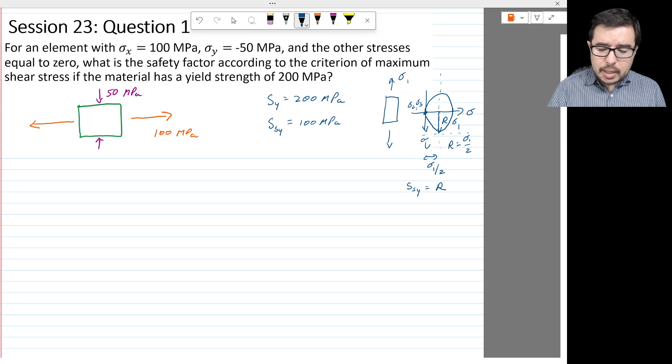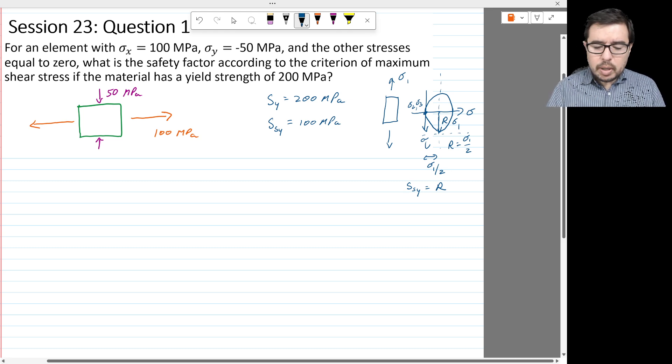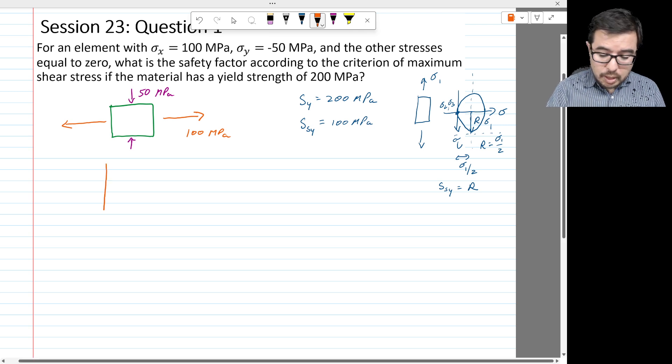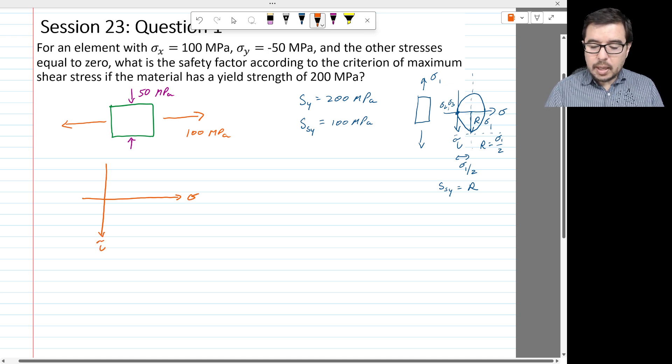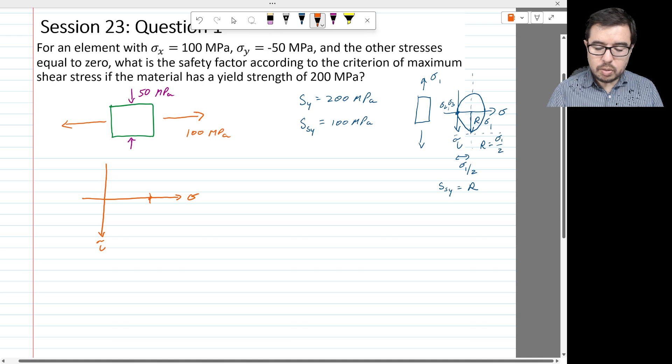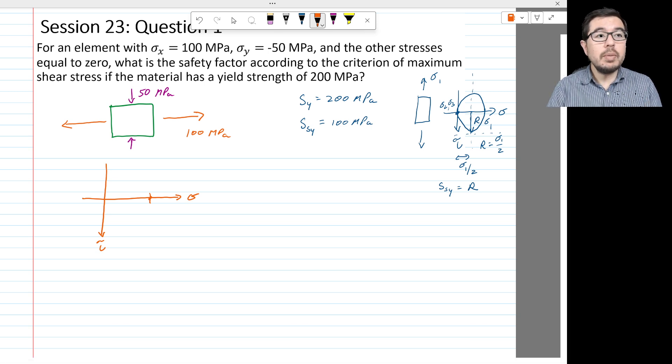For this problem, we will now draw a Mohr circle for the loading. Let's go ahead and draw the appropriate axes that we see there. And we're going to have a load out here at 100 MPa. There's no shear stress on this element, so that means that we are in a state, this is 2D, so sigma 3 would be equal to zero. But because there's no shear stress on the element, then we can say we have principal stresses.